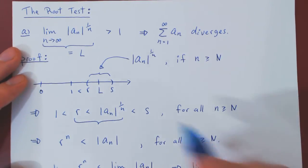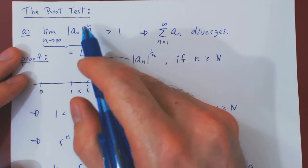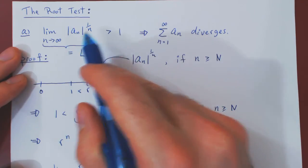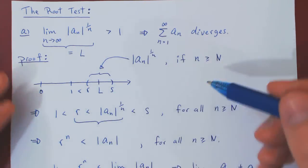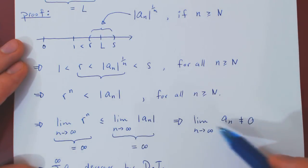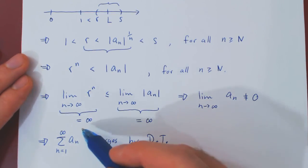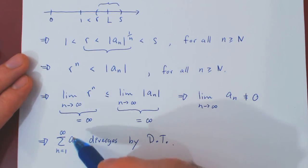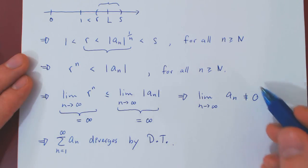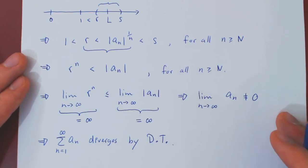So to summarize, if the limit as n tends to infinity of the nth root of a_n in absolute value is greater than 1, we were able to prove that the limit of a_n as n tends to infinity is not equal to zero, therefore we are trying to sum terms that are too large, and the series therefore diverges by the divergence test. And that's it.